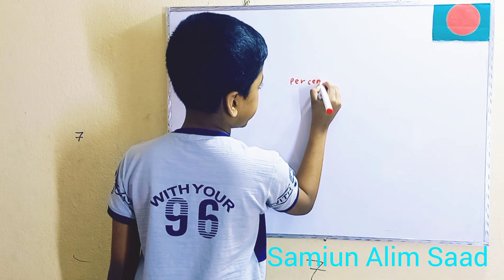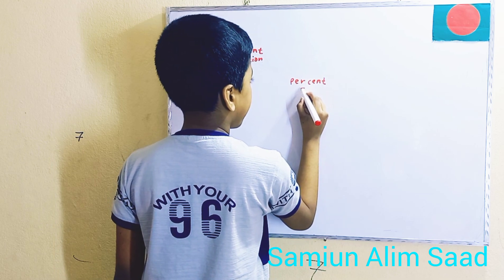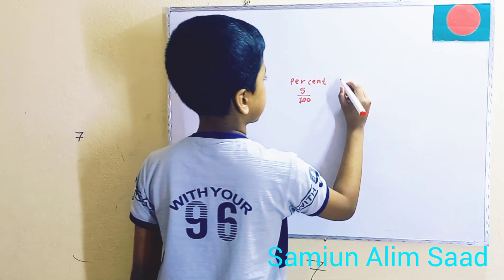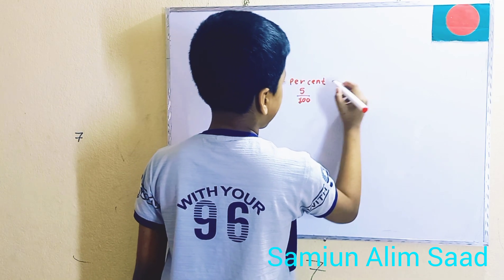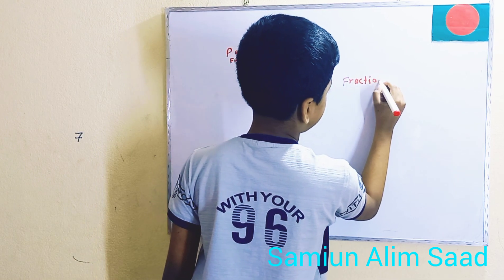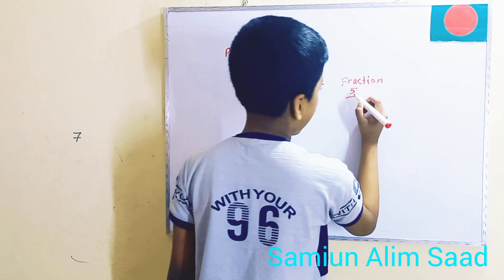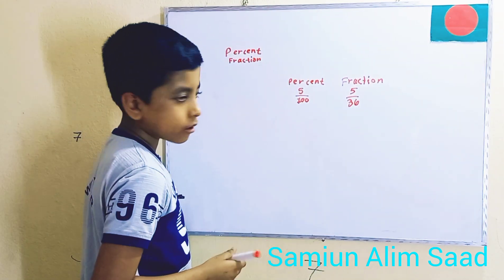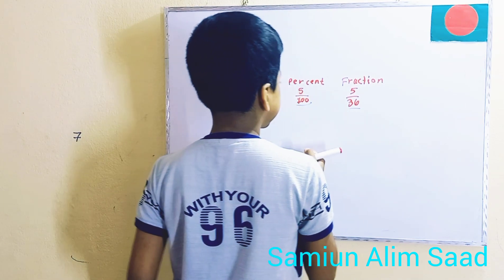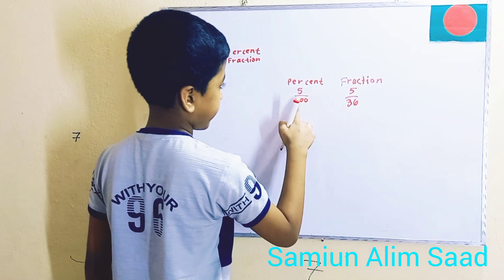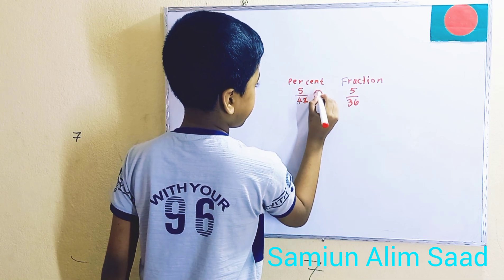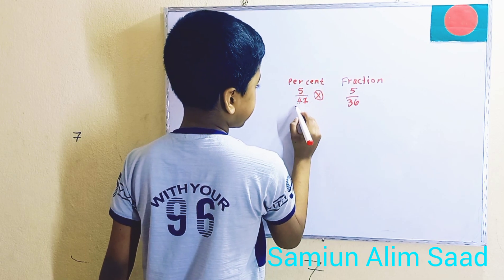Let's differentiate between percents and fractions. Let's say 5%. That's the percent form. And then we also have a fraction, which has a number like 5 over 36 — a random number. Now, if you chose a random number for the bottom of a percent, like 41, would it still be a percent? No, because a percent always needs to have 100 as the denominator.